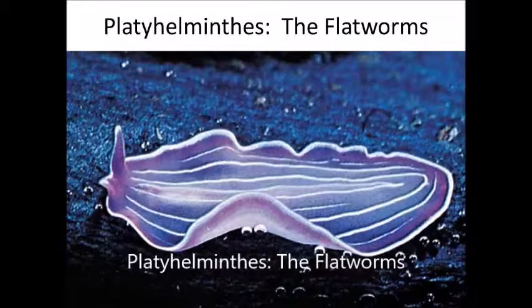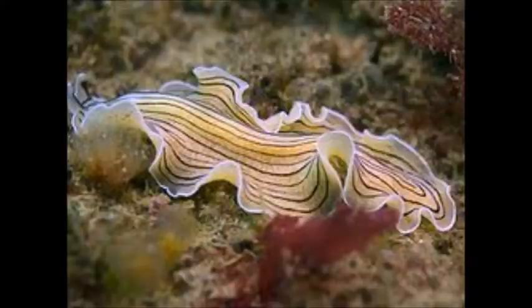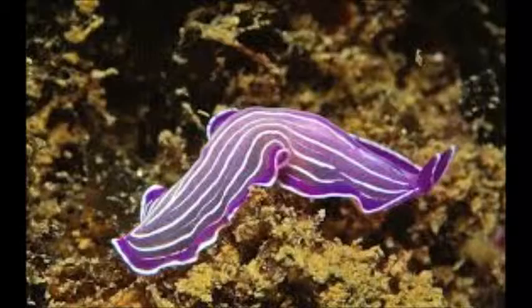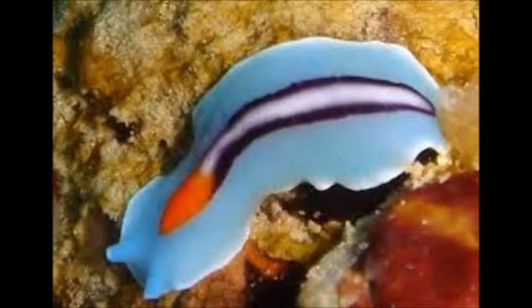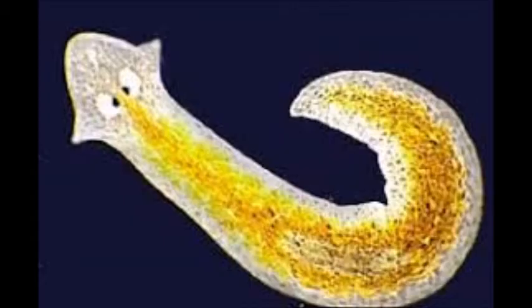Next we have Platyhelminthes. This phyla consists of flatworms. Not all were flat, but this phyla they were multiplied typically. The organisms in this phyla are bilaterally symmetrical. Flatworms also contain tissues.